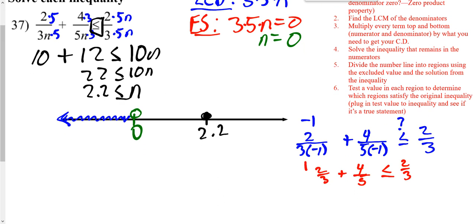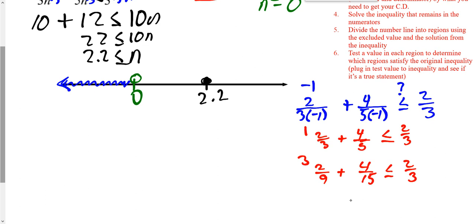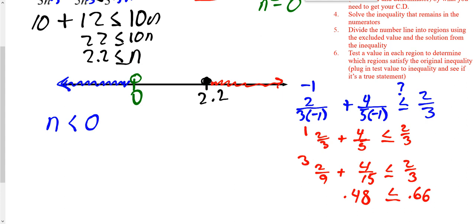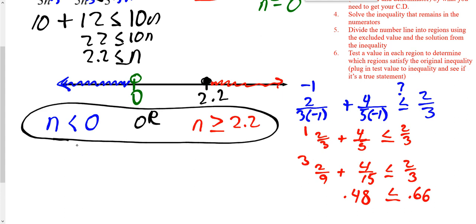I'm going to try a number to the right of 2.2 — I'll try 3. Plugging 3 into the original, I get 2 over 9 plus 4 over 15, less than or equal to 2 thirds. Typing that into a calculator as a decimal, I get 0.48 on the left and 0.66 on the right. Since 0.48 is less than 0.66, it does work. So I'm going to shade to the right. My answer: N is less than 0, or N is greater than or equal to 2.2.